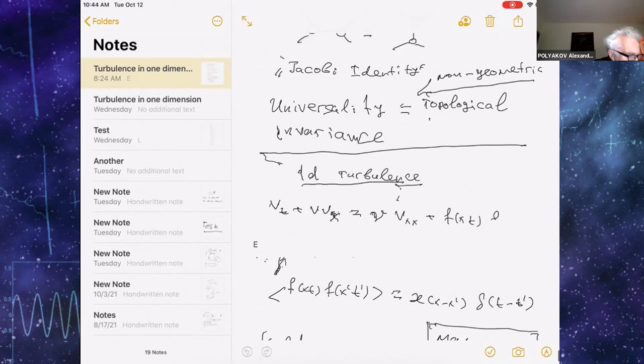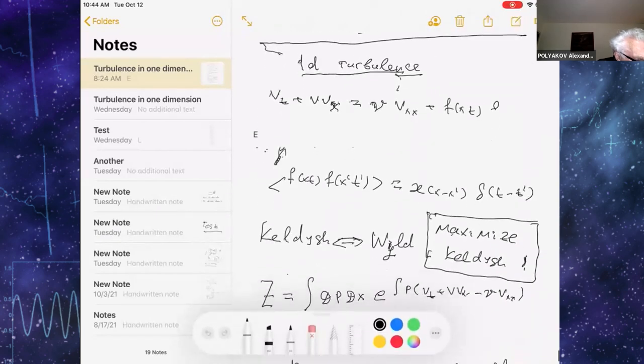It's commonly accepted that you can generate turbulence with the force being Gaussian random force, which will not matter at the end.